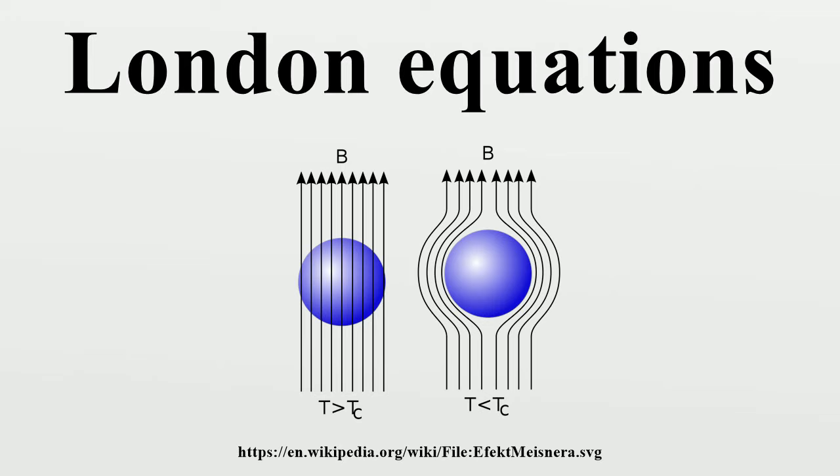Formulations: There are two London equations when expressed in terms of measurable fields. Here J is the superconducting current density, E and B respectively the electric and magnetic fields within the superconductor.